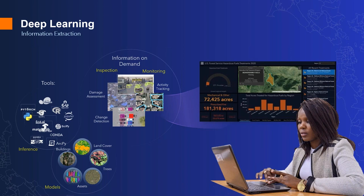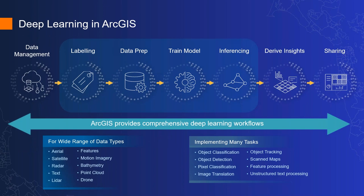Deep learning is certainly an area that has grown immensely in the last years. ESRI supports a full range of deep learning capabilities, integrating tools from multiple inferencing engines including TensorFlow, and supports the complete workflow: image management, generating labels required for deep learning, preparing datasets for training models, training the models, performing inferencing, and then deriving insights within ArcGIS and sharing datasets.